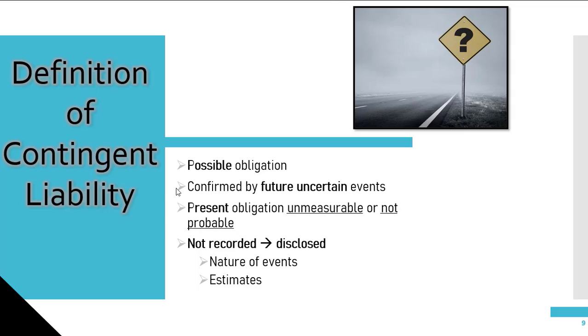While provisions are recorded in the financial statements, contingent liabilities are not recorded but instead disclosed. If the probability of the outflow is remote, the contingent liability doesn't need to be disclosed.